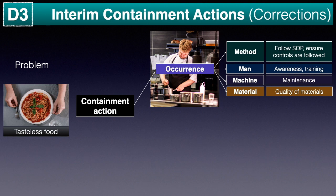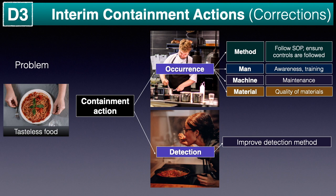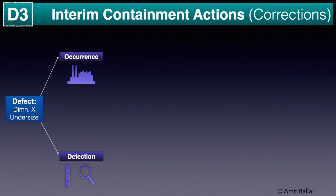The second type of containment action is detection control. Since we don't know the exact root cause of the problem, the occurrence of the same problem is still possible even if precautions are taken. Hence we need to be able to detect the problem in case it occurs. We will need to either improve the detection method and/or increase the detection frequency.